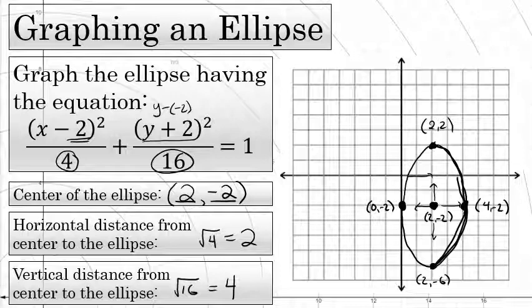Pictured here is the graph of the ellipse x minus 2 squared over 4 plus y plus 2 squared over 16 equals 1.